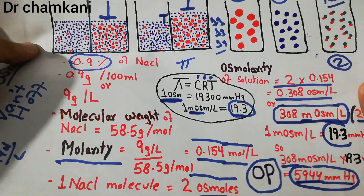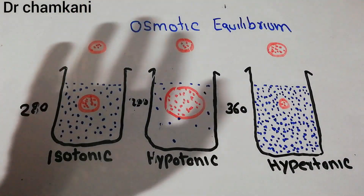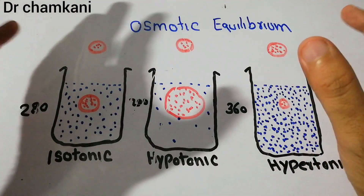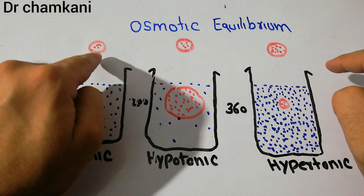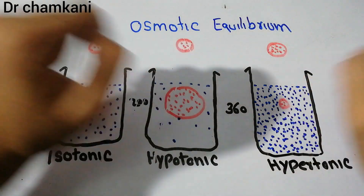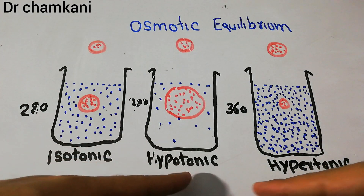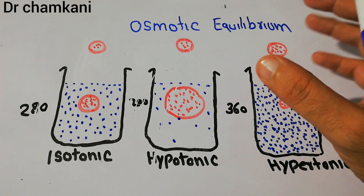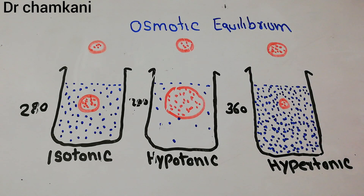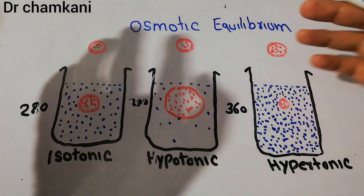Now we are going to discuss the effects on different body cells when they are kept in solutions with different amounts of solute. Suppose this is a single cell of the human body and we put this cell in different types of fluids — isotonic, hypotonic and hypertonic — and observe the effects. We will see the application of osmosis, osmolarity, osmotic pressure and different types of body fluids on the human body.